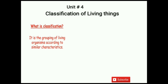Why is classification necessary? Do you know the number of plants and animals found on the earth? There are about 7.7 million species of animals and over 0.3 million species of plants in the world. Can you study all the known plants and animals without any system of classification? Never! That's why a need was felt to classify all living things.